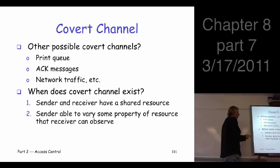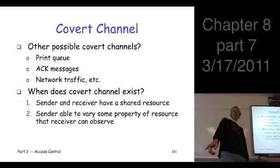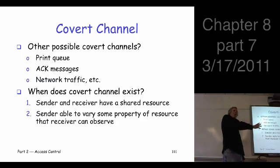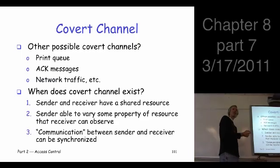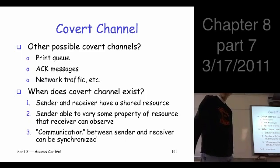In general, when does a covert channel exist? It really doesn't take very much. What has to happen is the sender and receiver have some resource they share — they can both view the file system or something along those lines. Then the sender has to have some property of that resource they can change — something can change that the receiver can observe. And there has to be some timing element: you can only get one bit or one set of bits at a time; if you want more, you have to synchronize. That's it. In general, that's not really asking for very much. If you have that, you have the potential for a covert channel.